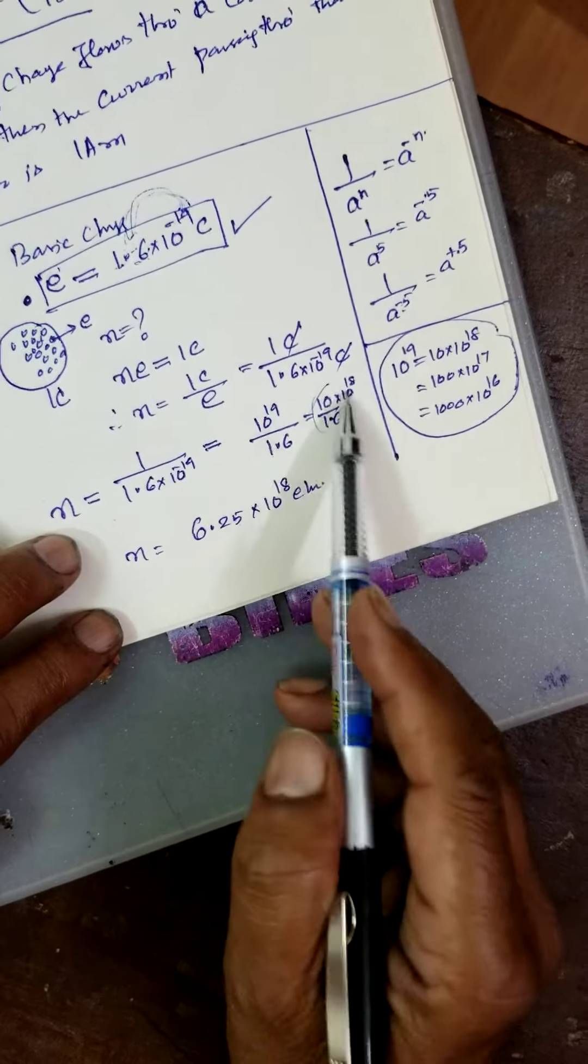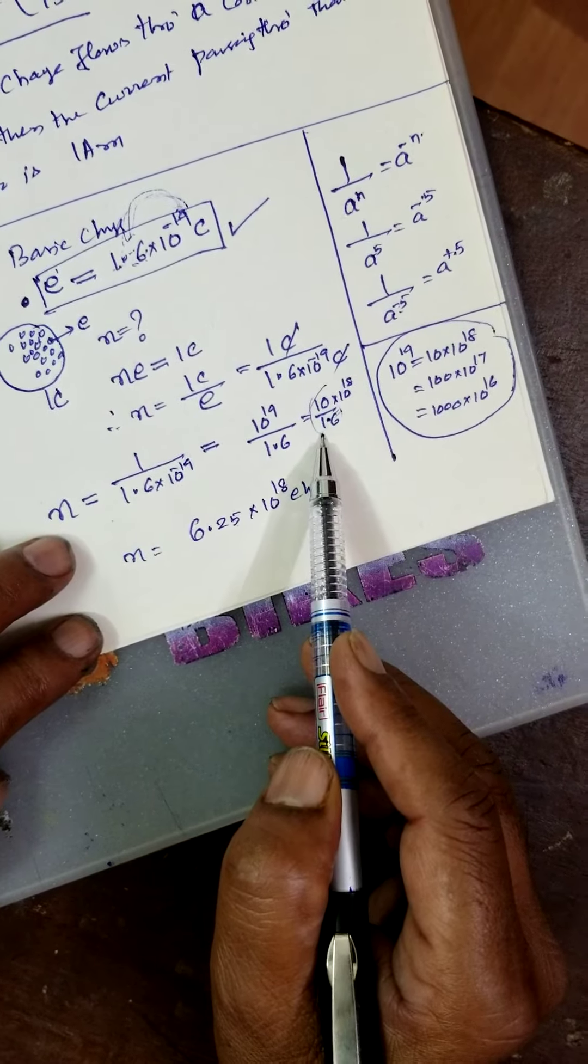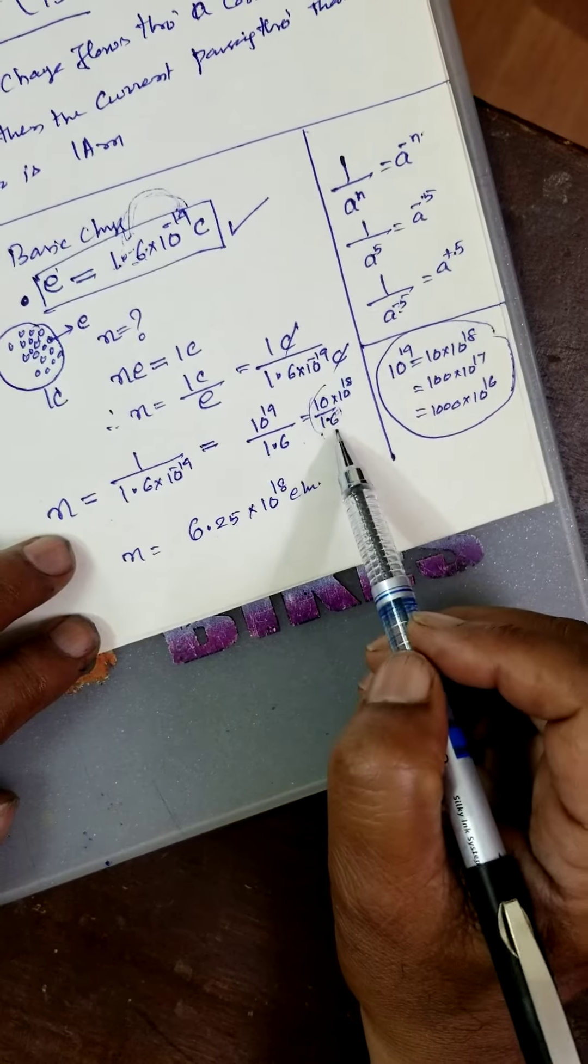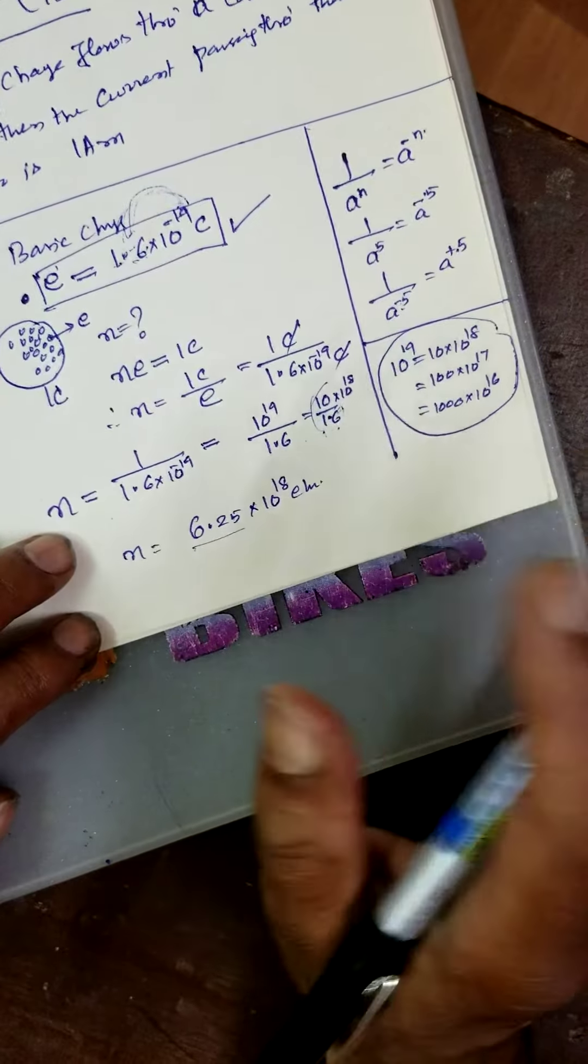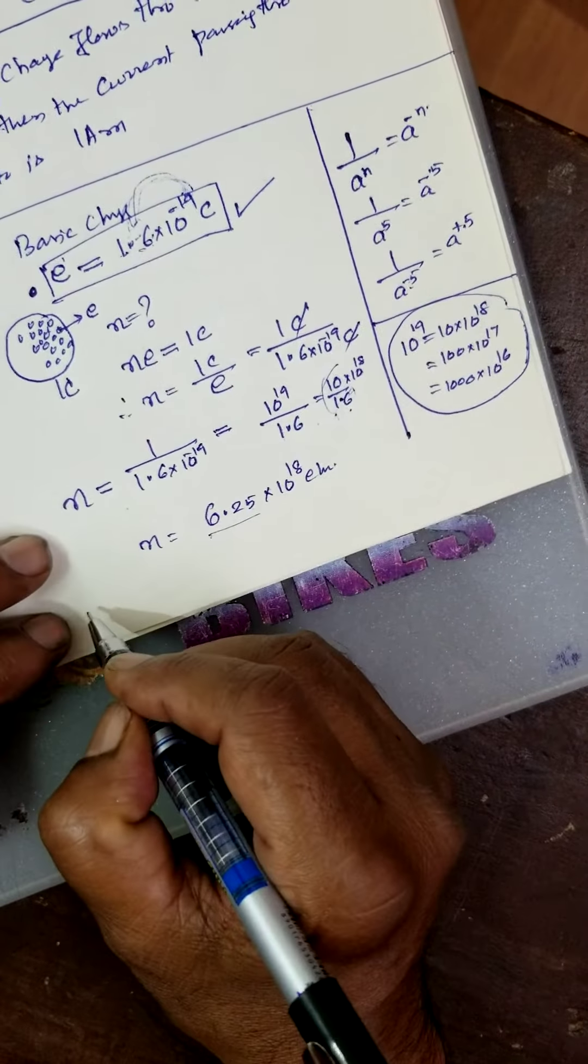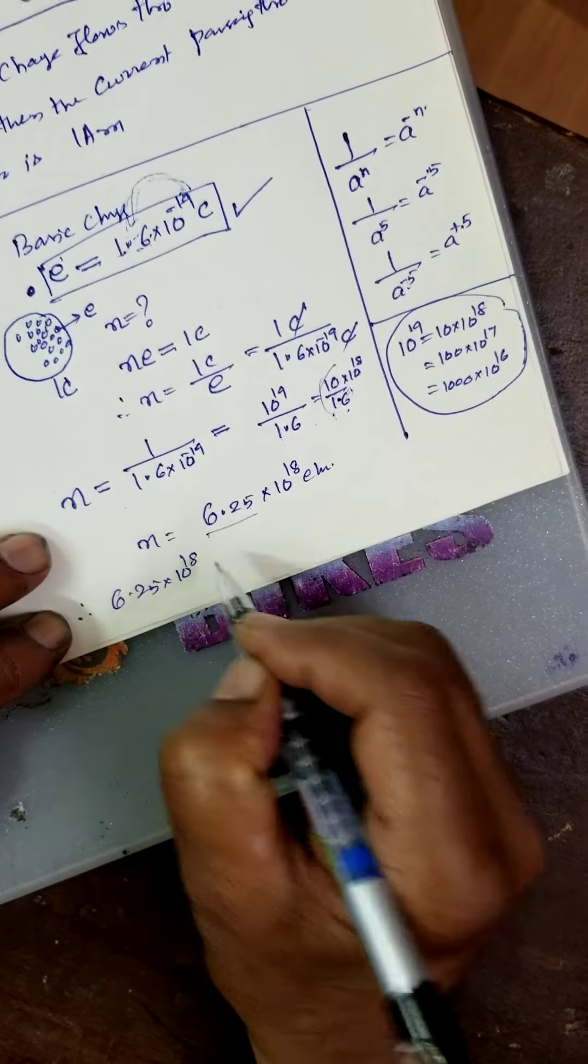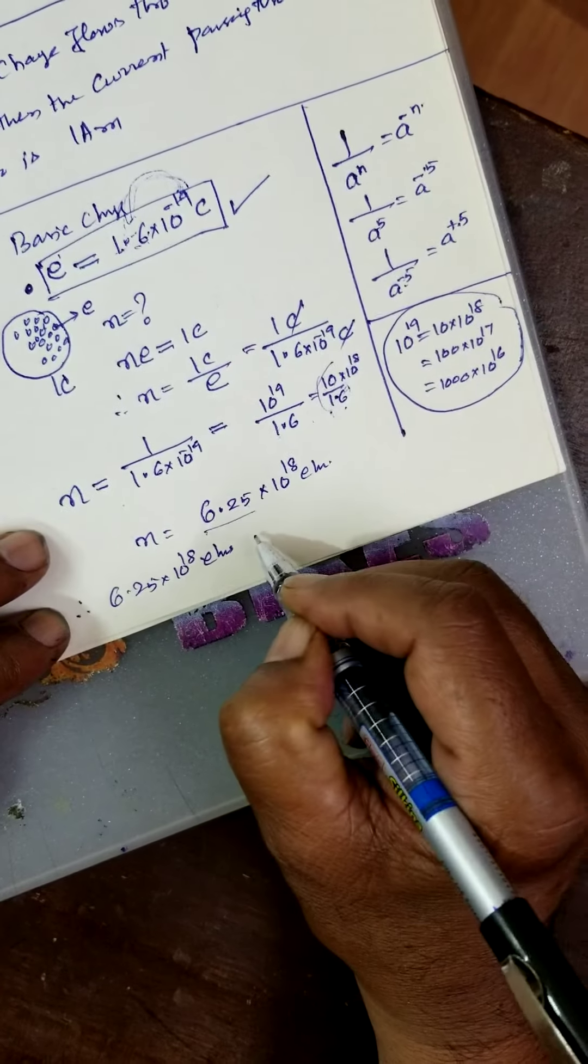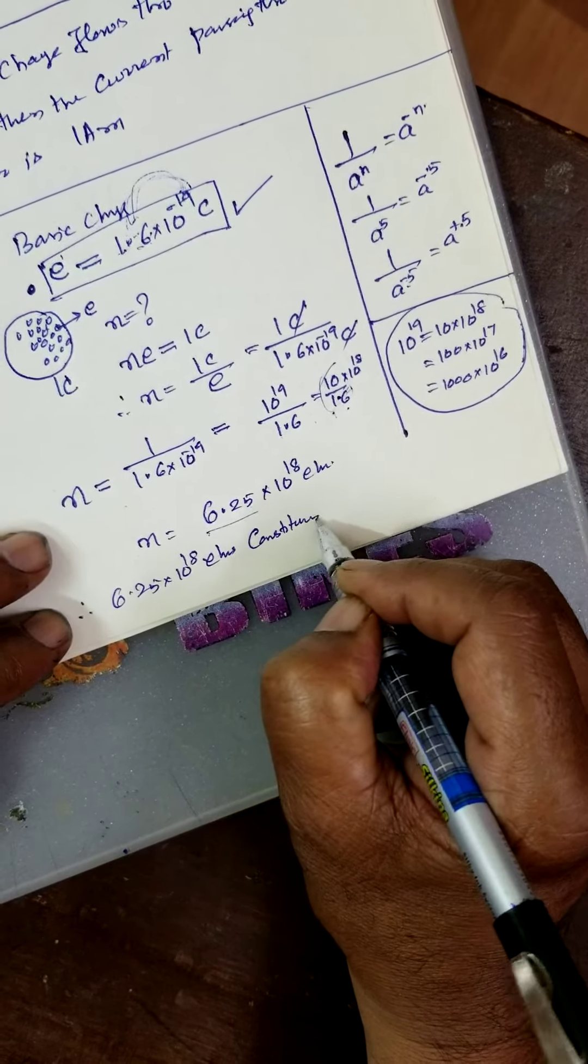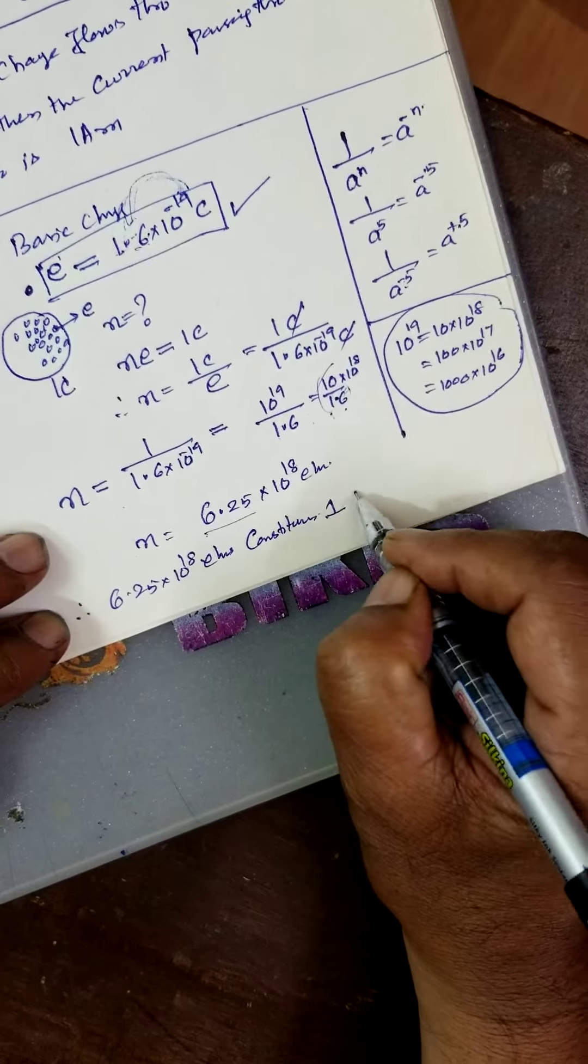Into 10 to the power of 18 electrons. Even if it is wrong, just understand the concept. Just press 10 divided by 1.6 in the calculator, you will get 6.25. Therefore, 6.25 into 10 to the power of 18 electrons constitute, constitutes 1 coulomb.